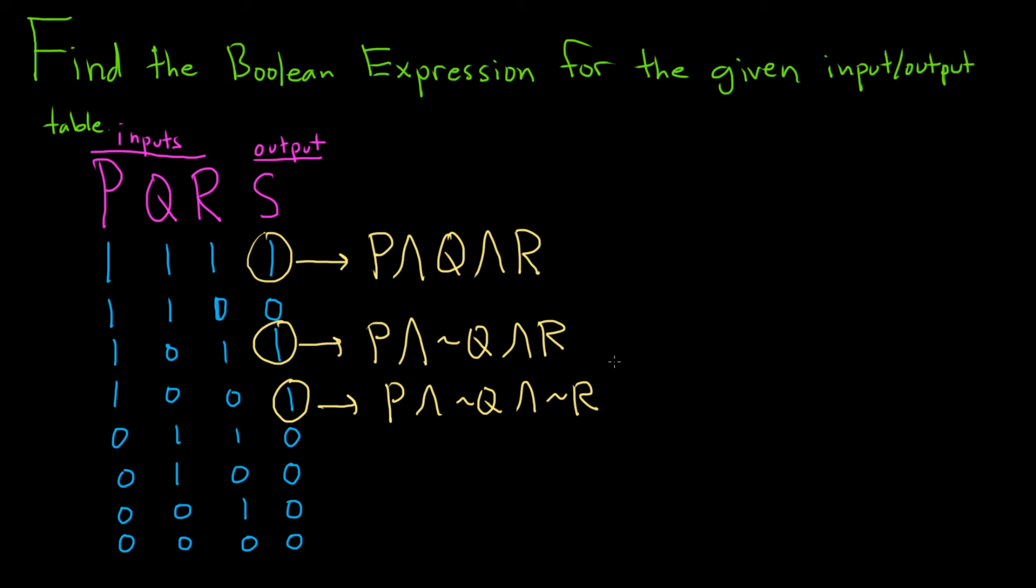Now, all you do is you or these. So you take all of these and you put an or, and that's it. We have a Boolean expression. So it'll be p and q and r. Or, and then we have p and not q and r. Or, and then we have p and not q and not r.